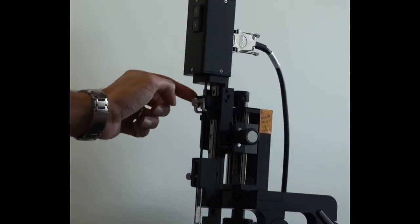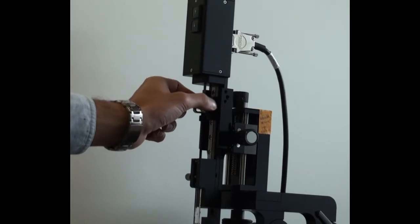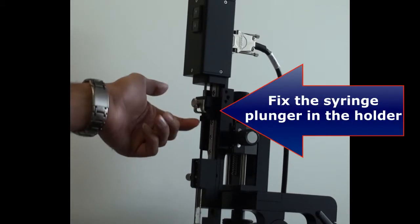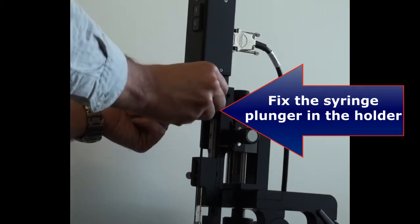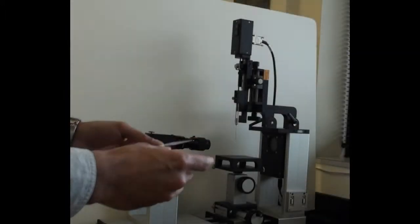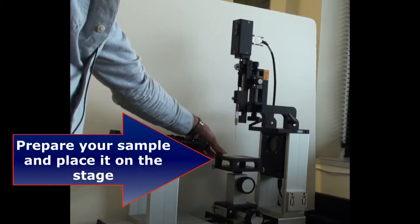Now that the plunger holding unit is in contact with the plunger, move the securing plate up and secure the plate, then locate it on top of the stage.